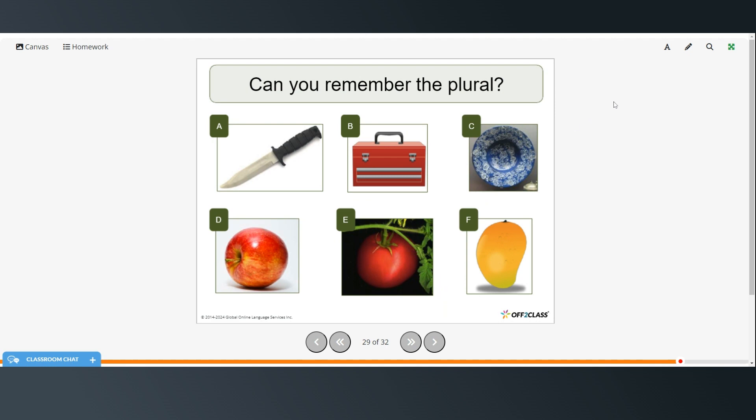Alright, so can you remember the plurals of each of these? You can pause the video, try that on your own, and then restart when you're ready to check the answers. Okay, so A, the plural would be knives. B, toolboxes. C, dishes. D, apples. E, tomatoes. And F, mangoes or mangos.